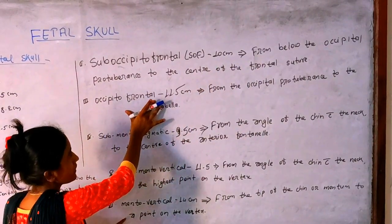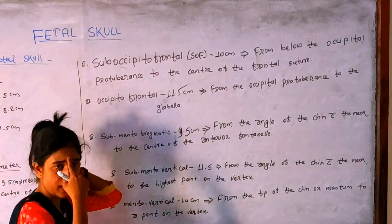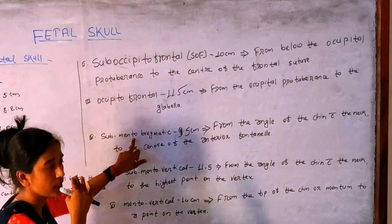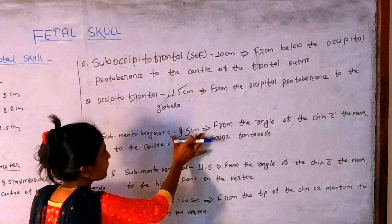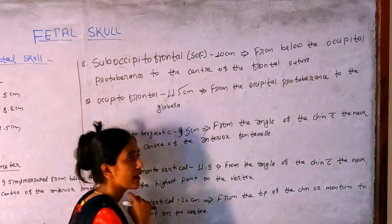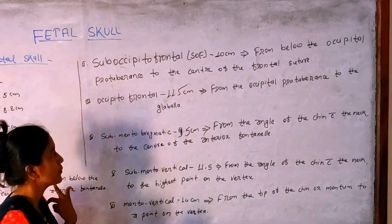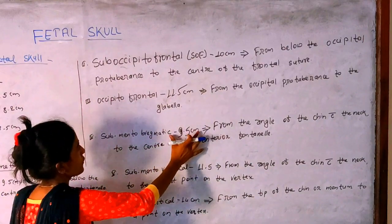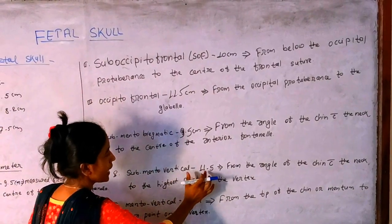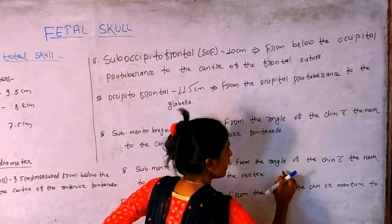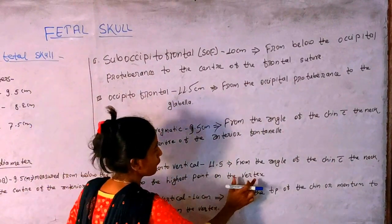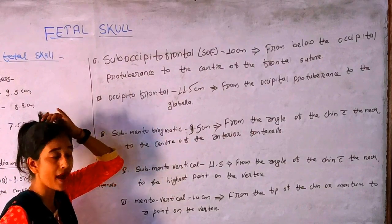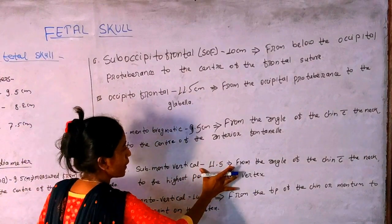The occipitoglabellar diameter is 11.5 cm. The submentobregmatic diameter is 9.5 cm, measured from the angle of the chin with the neck to the anterior frontal region. The submentovertical diameter, from the tip of the chin to the highest point of the vertex, is 11.5 cm.